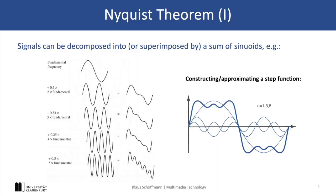To digitize a signal without loss we must consider the Nyquist theorem. And in order to understand that we take a look at this slide here, where we can see that signals can be decomposed into a sum of sinuids or frequency components.